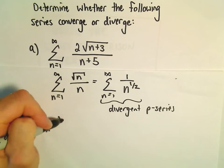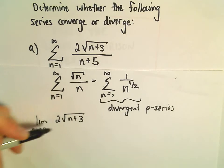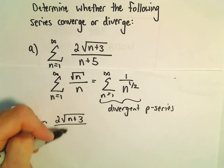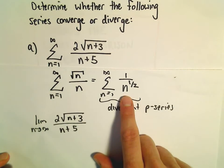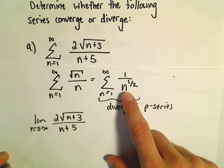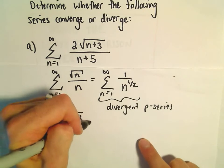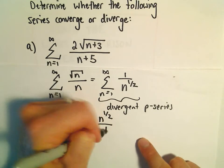So now we'll just do this limit comparison test. The limit as n goes to infinity. So our original series will have 2 times the square root of n plus 3 over n plus 5. Again, this is what I'm going to compare it to. So normally we would divide by 1 over n to the 1 half. But equivalently, we can multiply by n to the 1 half over 1.